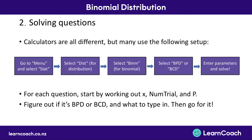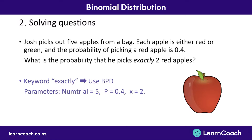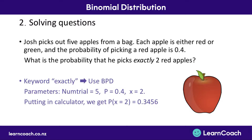Let's try an example. Josh picks out five apples from a bag. Each apple is either red or green, and the probability of picking a red apple is 0.4. What's the probability that he picks exactly two red apples? The keyword 'exactly' tells us to use BPD. The number of trials is five, the probability of success is 0.4, and the number of successes is two. Putting all of that into our calculator, we get that the probability of picking exactly two red apples is 0.3456.